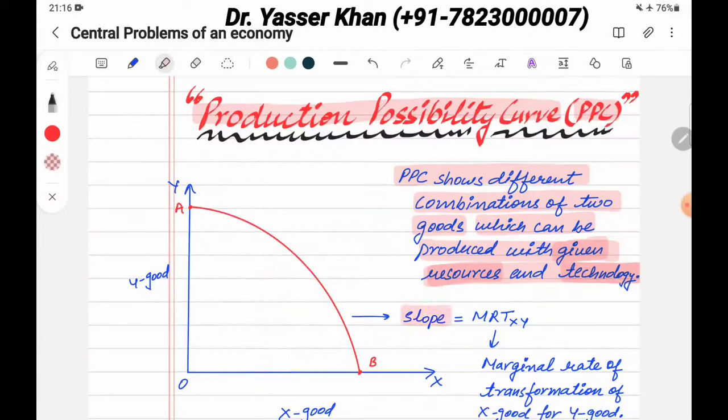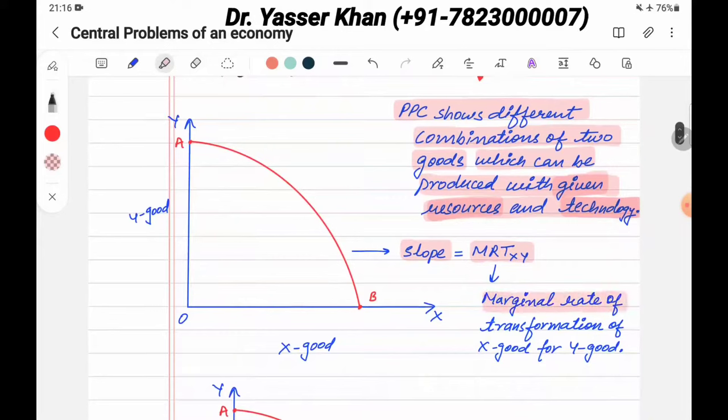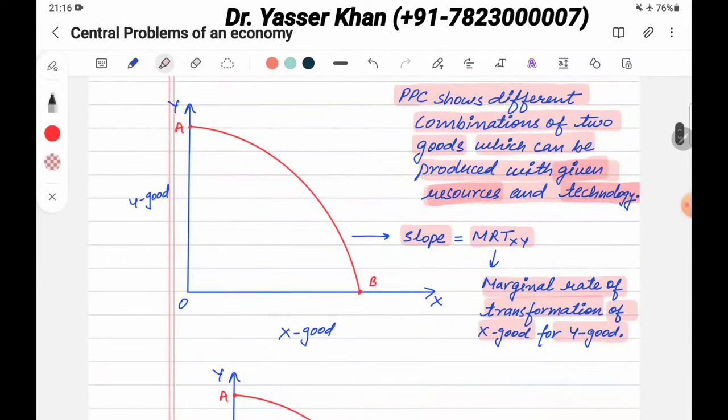Now, the slope is called MRT XY. MRT means Marginal Rate of Transformation of X good for Y good. If you take X good, then Y good will be sacrificed. The slope is Marginal Rate of Transformation. Now I will go into a little more detail.